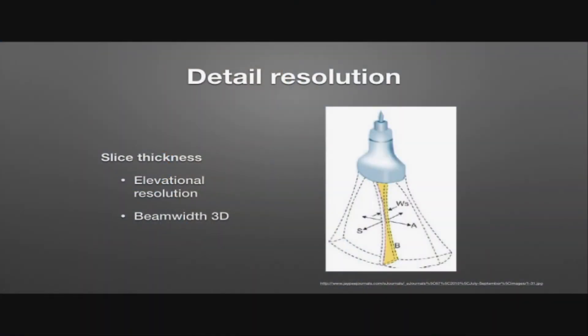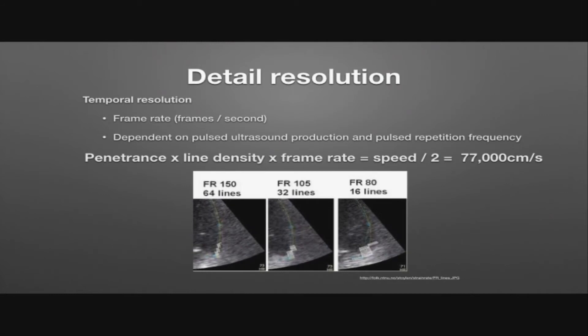Finally, in terms of trying to separate two structures, let's consider slice thickness. This is the ability to resolve two structures in the elevation of the beam width, and it reiterates the fact that the beam is a three-dimensional structure. We've got to resolve images in the axial plane, the lateral plane, and in the elevation plane. If you get a structure smaller than the elevation plane of the beam width, that's going to be able to generate an echo regardless. As well as structures separated by distance, we also need to consider structures separated in time — for instance in echocardiography, we're often looking at moving structures.